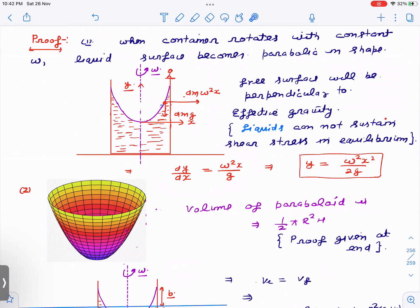If suppose you're standing on the container, then with respect to you, I have to put the observer here because I'm going to apply centrifugal force. So free surface will be perpendicular to the effective gravity. That we know because the very important property of liquids which differentiate liquids from the solid is that liquids cannot sustain shear stress in equilibrium. So liquids can resist shear stress only when they are moving, otherwise they can't.